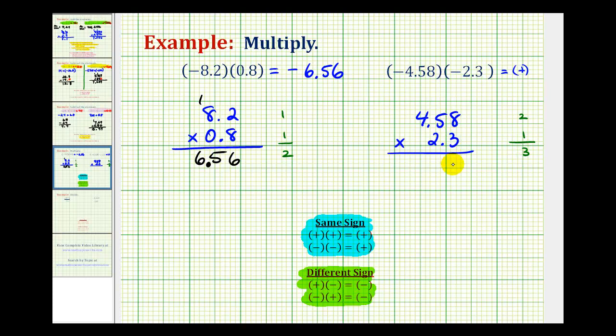So 3 times 8 is 24, we carry a 2, 3 times 5 is 15, plus 2, that's 17, carry a 1, 3 times 4 plus 1 would be 13.